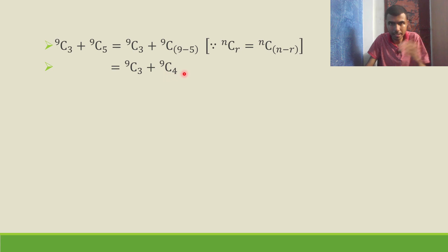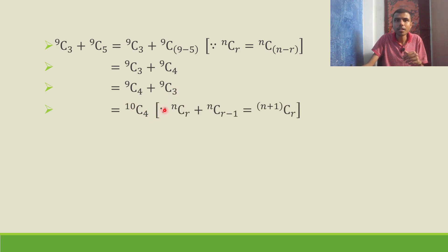So this will be 9C3 plus 9C4. Reverse it: 9C4 plus 9C3. Now this is of the form nCr plus nC(r-1), 9C4 plus 9C(4-1). This is 9 plus 1C4.